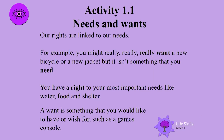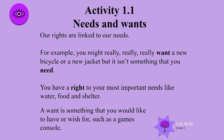Needs and wants. Our rights are linked to our needs. For example, you might really want a new bicycle or a new jacket, but it isn't something that you need. You have a right to your most important needs like water, food and shelter. A want is something that you would like to have or wish for, such as a games console.